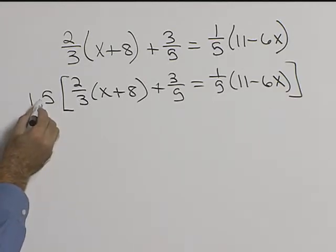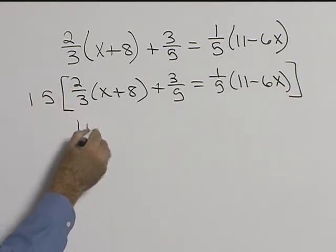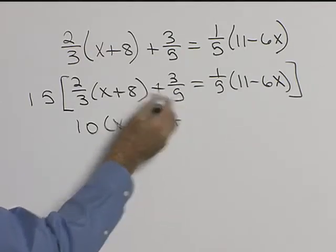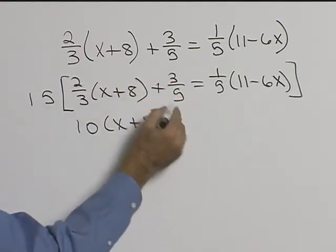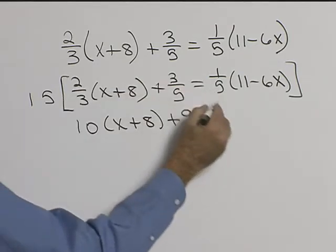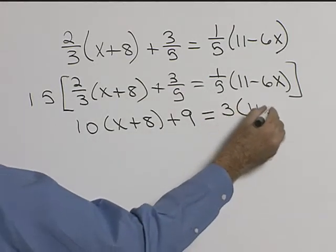3 goes into 15 five times, times 2 will be 10 times x plus 8, plus 5 goes into 15 three times, times 3 is 9, equals 5 goes into 15 three times times what's in parenthesis.